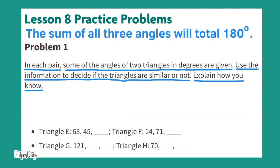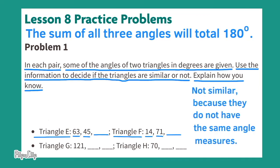Triangle E has 63 degrees, 45 degrees, and an unknown measure. Triangle F has 14 degrees, 71 degrees, and an unknown measure. These triangles are not similar because they do not have the same angle measures.